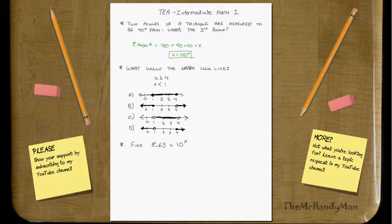Moving on, what would the graph look like if x is greater than or equal to 4, or x is less than 1?